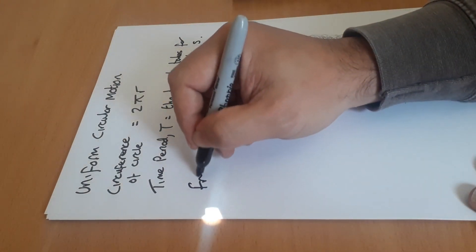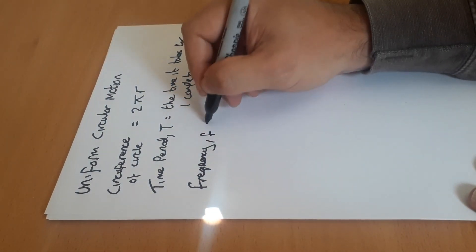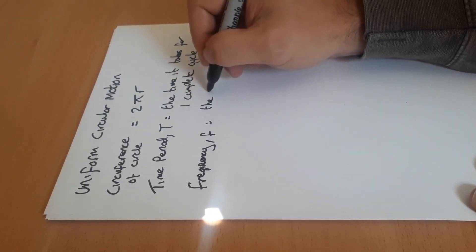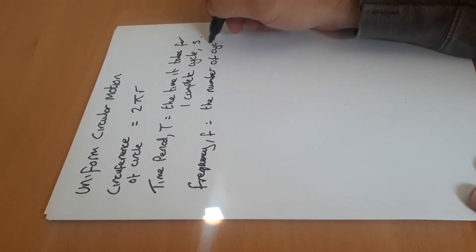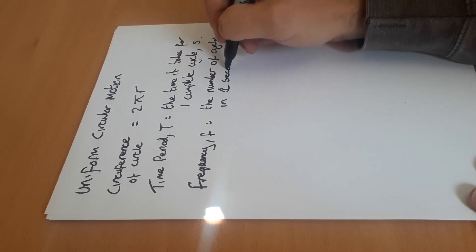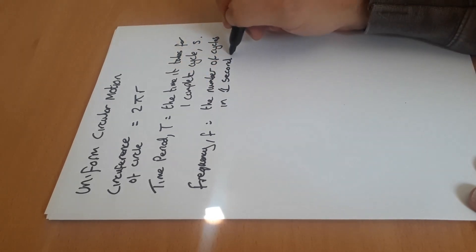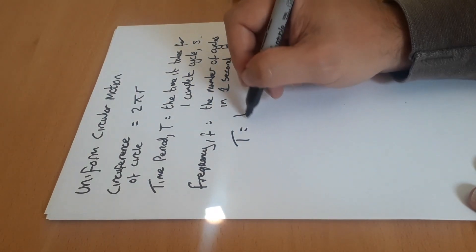And therefore, obviously, frequency - the number of cycles in one second. Okay, and you measure that in Hertz. Remember, these two things are related by T equals one over f.